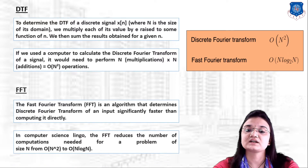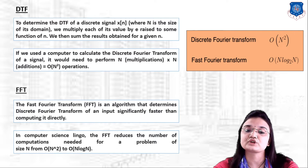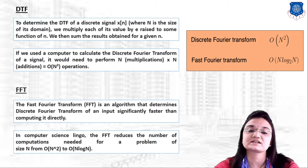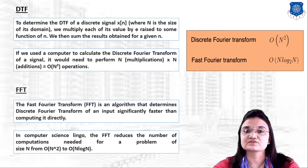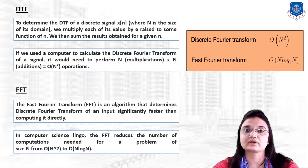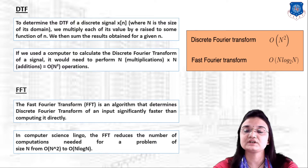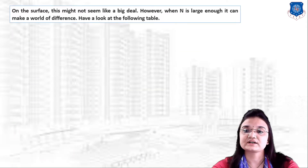In computer science terms, the FFT reduces the number of computations needed for a problem of size N from N² down to N·log(N), which greatly reduces the number of computations required.